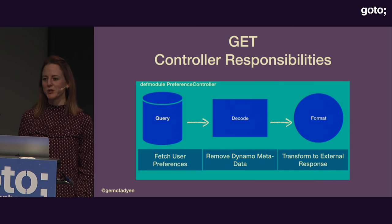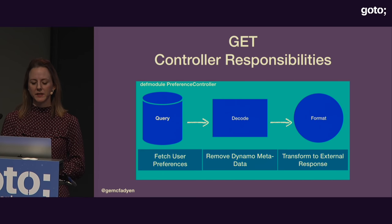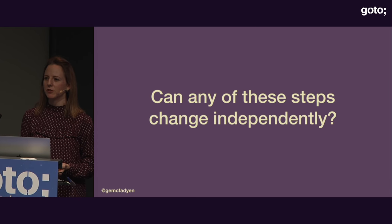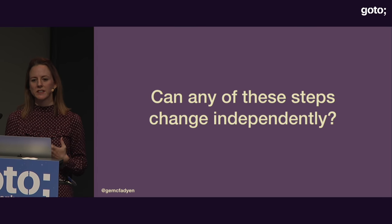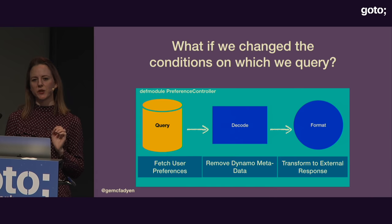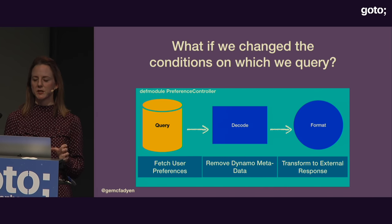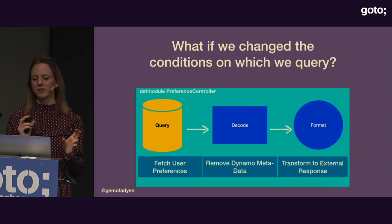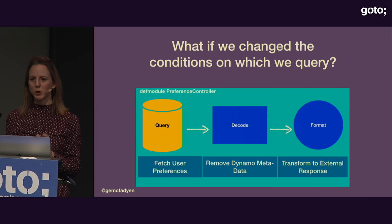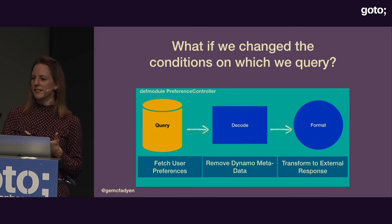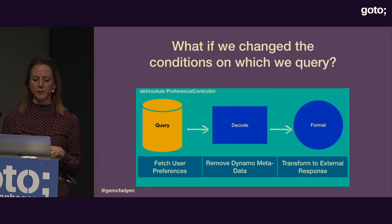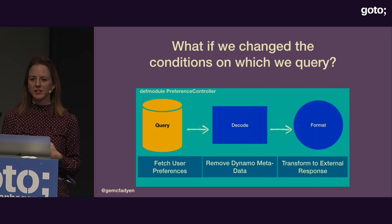So is that really single responsibility? Those three steps do make up fetching user preferences. But one way to identify if you're violating the principle is to ask: can any of these steps change independently? For instance, if we changed the database query to use customer ID and country of origin, would that mean our JSON response needed changing? Probably not. As long as the data format coming back is the same, the downstream steps wouldn't be affected. So we may have steps that could diverge and change independently — potentially violating single responsibility.